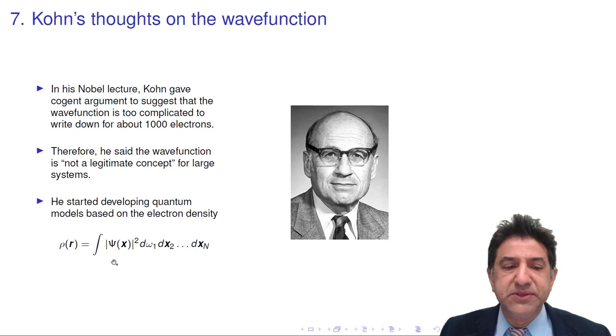And this would give you the probability density of one electron. Now all electrons are the same. So if you want the total electron density, we would only have to multiply that by the number n, which is the number of electrons.